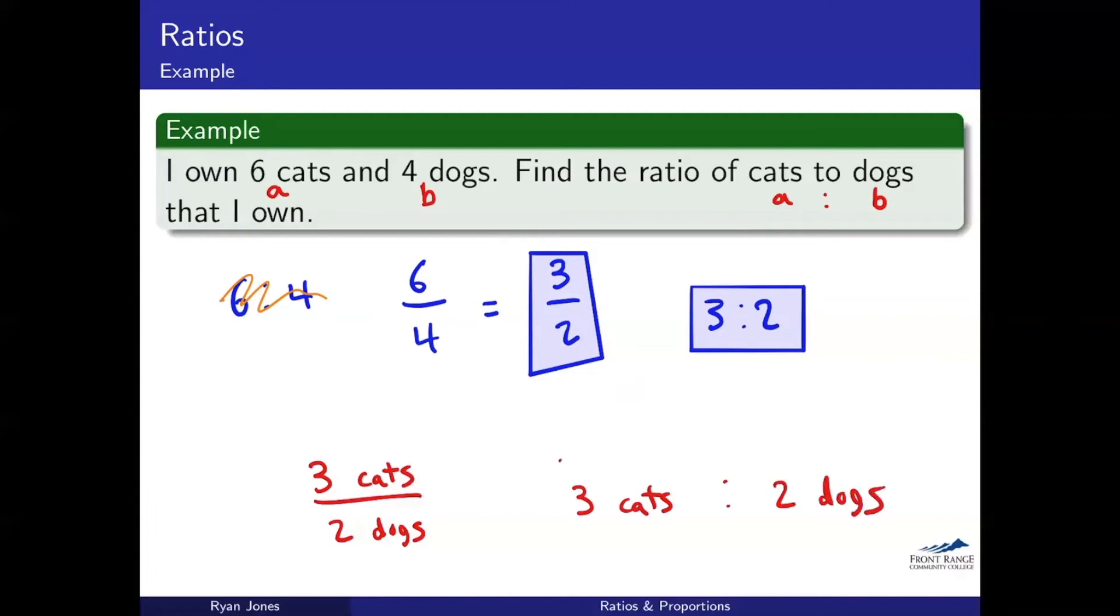Something that you generally want to be careful of is actually units here. If it's obvious in the problem, you don't really have to, but a lot of people will actually write their answers as three cats to two dogs. If it's clear in the problem, we're only dealing with cats and dogs, we really don't need to write those units. But maybe if I said that I also own another couple birds, and then I said find the ratio of cats to dogs, it might be helpful to write those actual words, cats and dogs, just so we can really explicitly see that.